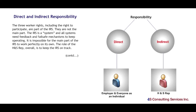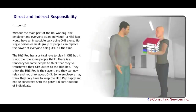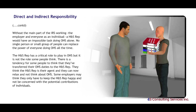The three worker rights, including the right to participate, are part of the IRS, though they are not the main part. The IRS is a system, and all systems need feedback and fail-safe mechanisms to keep operating. It is impossible for the main part of the IRS to work perfectly on its own. The role of the H&S Rep, overall, is to keep the IRS on track. Without the main part of the IRS working — the employer and everyone as an individual — a H&S Rep would have an impossible task doing OHS alone. No single person or small group of people can replace the power of everyone doing OHS all the time.